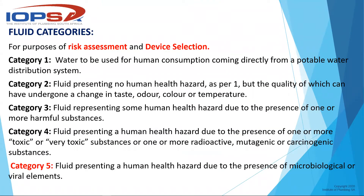For risk assessment purposes, water has been broken into five categories. Category one is water used for human consumption coming directly from a potable water distribution system - your normal municipal water. Category two is fluid presenting no human health hazard but whose quality may have undergone a change in taste, odor, color, or temperature. This would include water softeners on your line, or heated water from a geyser, meaning most houses fall into category two.